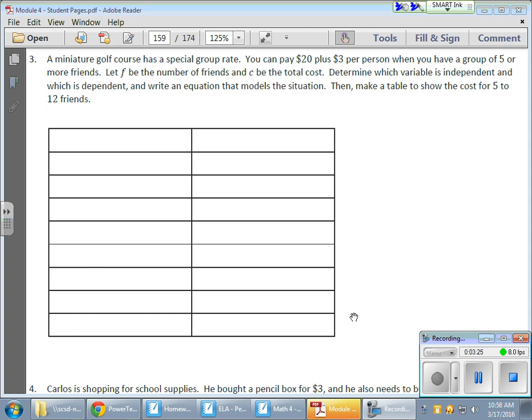So the number of friends is my independent here. Number of friends, because my total cost is going to greatly depend on my number of friends. I'm going to let F be that. And I need the total cost, I'll put that over here. And that'll be the variable C. Now, this is interesting because the total cost depends on how many people you have. So if we're doing five to 12 friends here, five, six, seven, eight, nine, 10, 11, and 12.